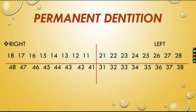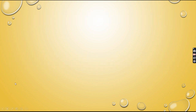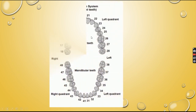For permanent dentition in the FDI system: starting with 11 to 18 for the right maxillary arch, 21 to 28 for the left maxillary arch, 31 to 38 for the left mandibular arch, and 41 to 48 for the right mandibular arch. Look at the image — you can easily understand this.